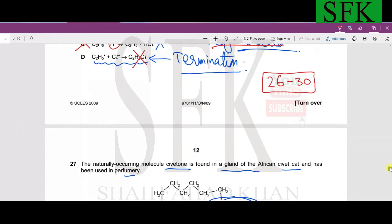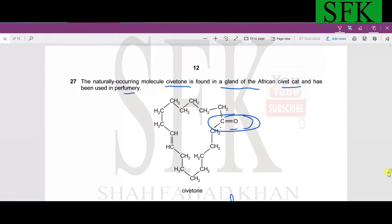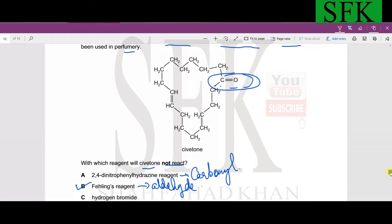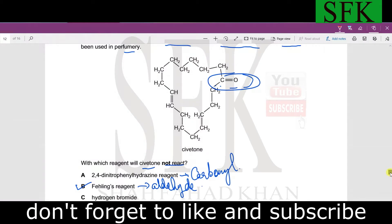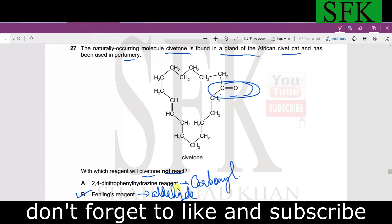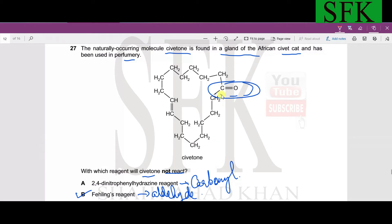Let's move on to the next one, MCQ 27. The naturally occurring molecule civetone is found in the gland of African civet cat and has been used in perfumery. This is the structure of that molecule. With which reagent will it not react? 2,4-DNPH reacts with carbonyl compounds. As we know there is a ketone group in here, so it will react.